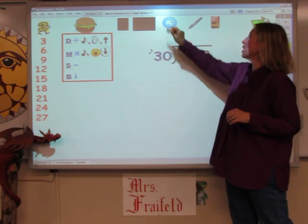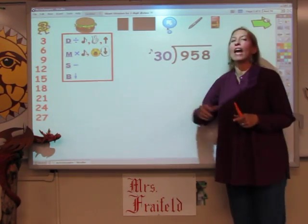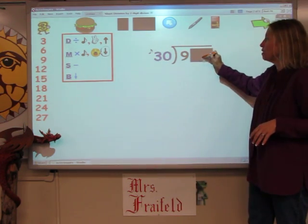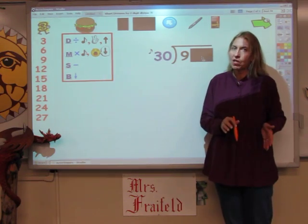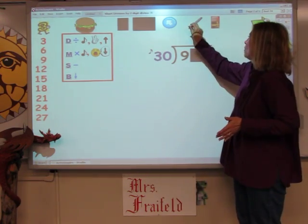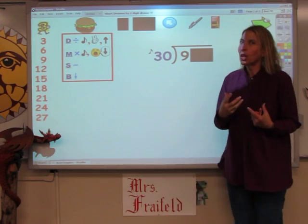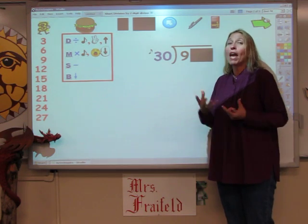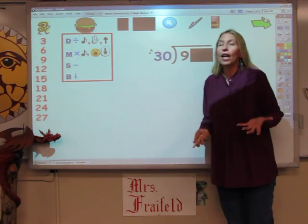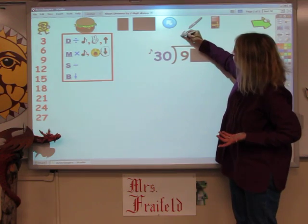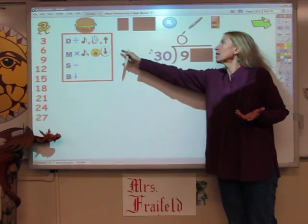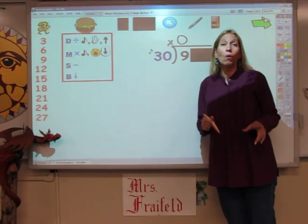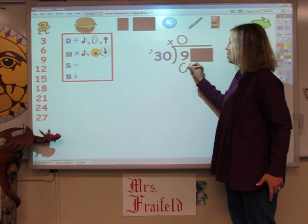The first thing I always think of is: don't look at everything unless you need to. Cover it up with a piece of paper, with your hand, with something. My first step of division is dividing. Well, isn't 30 bigger than 9? Can you make a group of 30 out of 9? No, you can't. So 0 is what you write up at the top. The next step is to multiply, and remember that any number times 0 always equals 0, so I write a 0 underneath the 9.